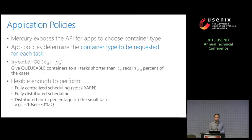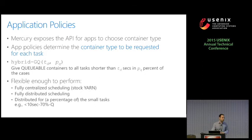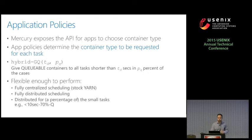Mercury exposes an API for applications to choose the container type. We define application policies that determine what container type will be used for each task. As a first implementation, we have defined a policy called Hybrid GQ, which gives queueable containers to all tasks that are shorter than X seconds in a given percentage of cases. Although simple, it is quite flexible: by tuning parameters, we can do fully centralized scheduling by asking only for guaranteed containers, fully distributed scheduling by asking only for queueable containers, or a mix — for example, queueable containers for tasks shorter than 10 seconds in 70% of cases.